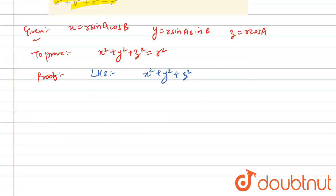Now substitute all the values of x, y, and z in this equation. What we will get is r² sin² A cos² B plus r² sin² A sin² B. Similarly, if we put z, z will become r² cos² A.